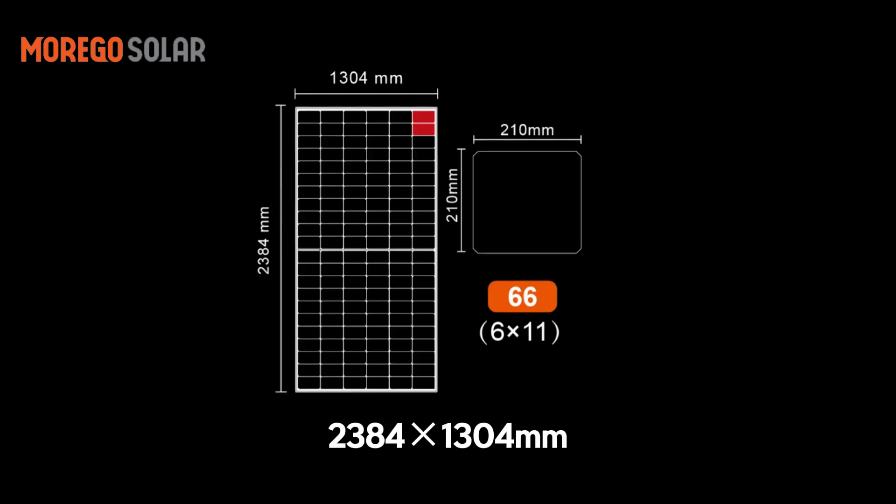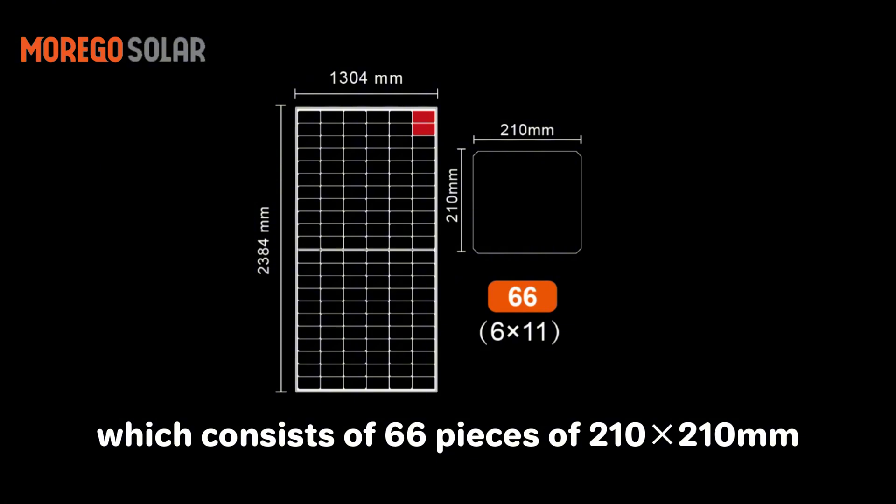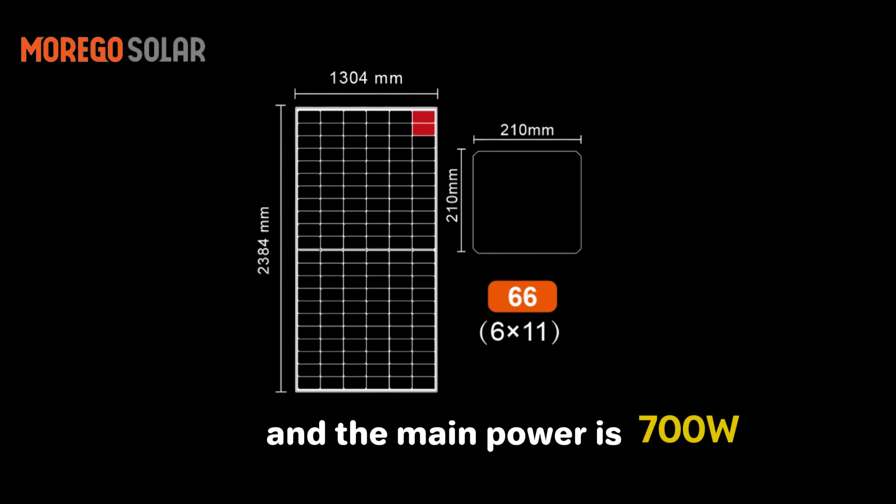Third one: 2384×1304mm, which consists of 66 pieces of 210×210mm cells, and the main power is 700 watts.